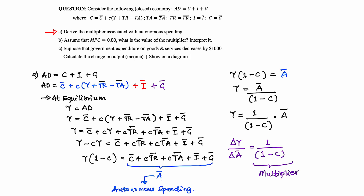That is, if any of the autonomous spending changes by 1 unit, we expect the change in income to be 1 over (1 minus C). And this is the derivation of the multiplier.